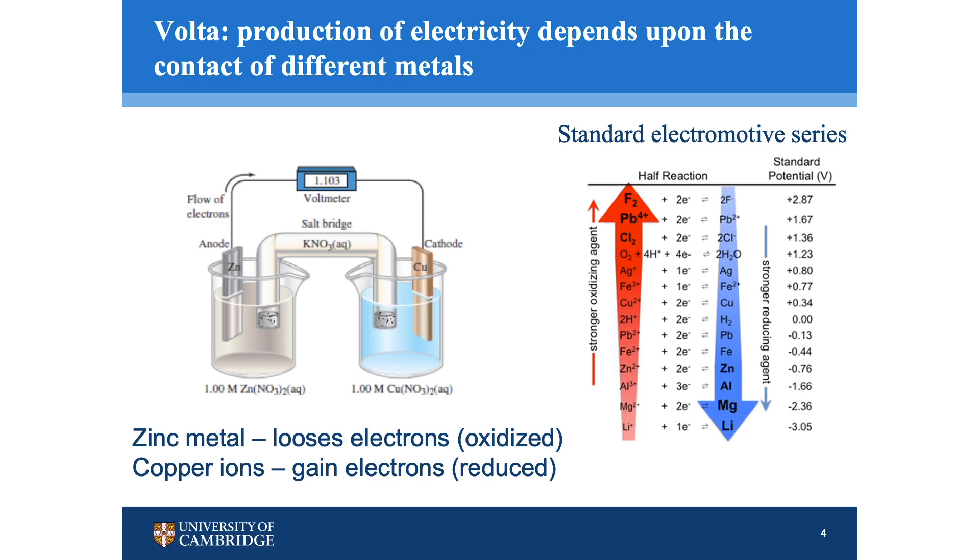The property of each material that defines how good it would be as an electrode in a battery has to do with its electronic properties. All the materials were listed in tables like these, called the standard electromotive series. This table describes the electronic properties of these materials and how good they will be as an electrode in a battery.